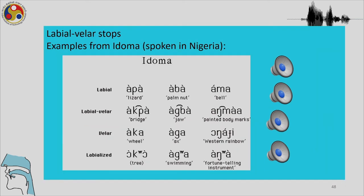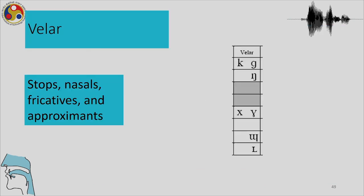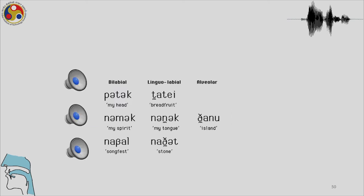We have labialized velar stops from Idoma, a language spoken in Nigeria — showing labial-velar versus labialized distinctions. Among velars we have stops, nasals, fricatives, and approximants.